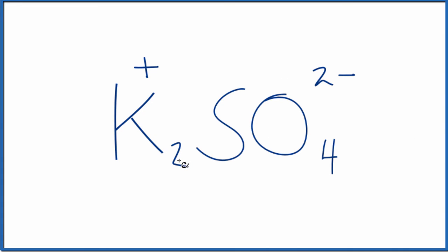So now we can see that we have two times one plus, that's two plus, and that balances out the two minus. So the net charge is zero. This is an ionic compound.